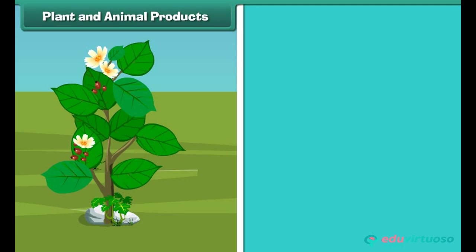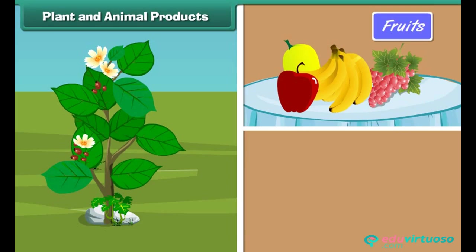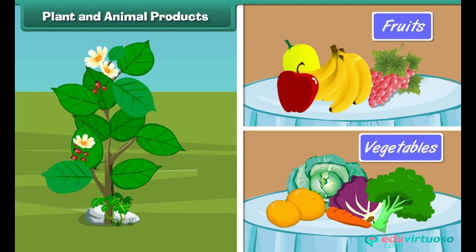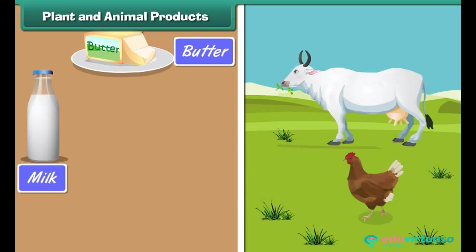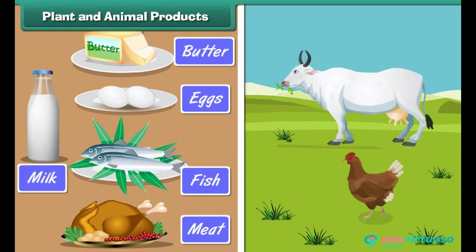Plant and animal products. We get our food from plants and animals. Fruits and vegetables are obtained from plants — they are called plant products. Milk, butter, eggs, fish, chicken, mutton, etc. are obtained from animals. They are called animal products.